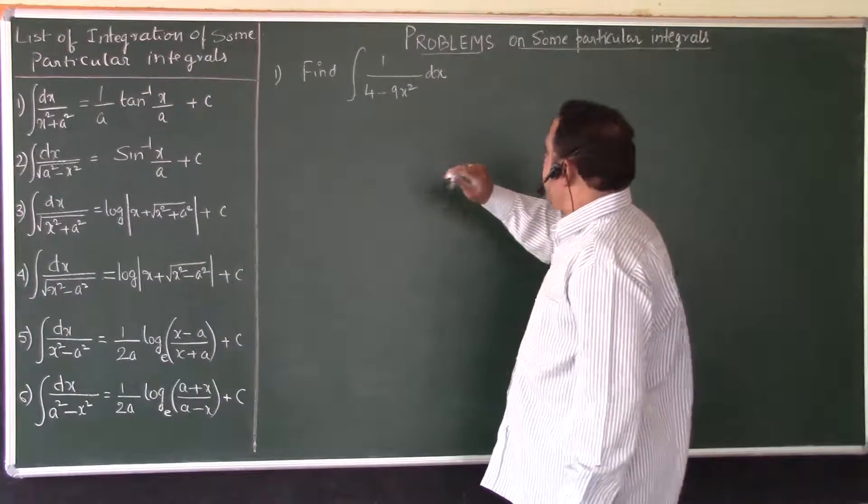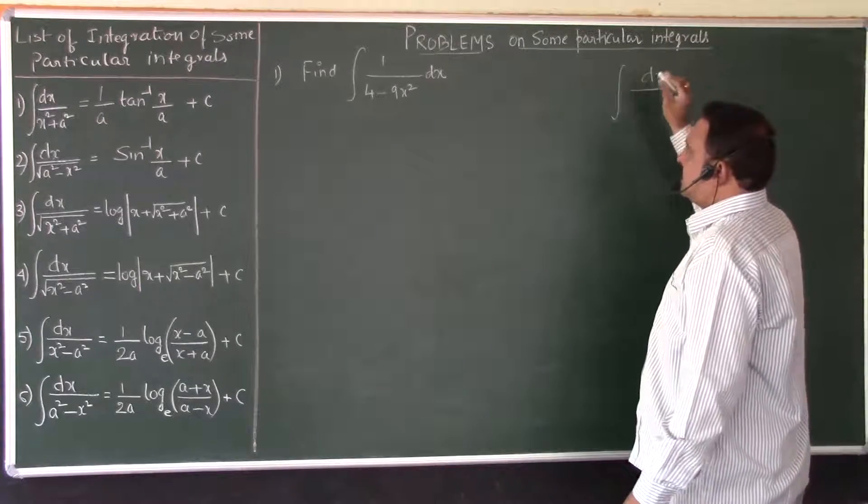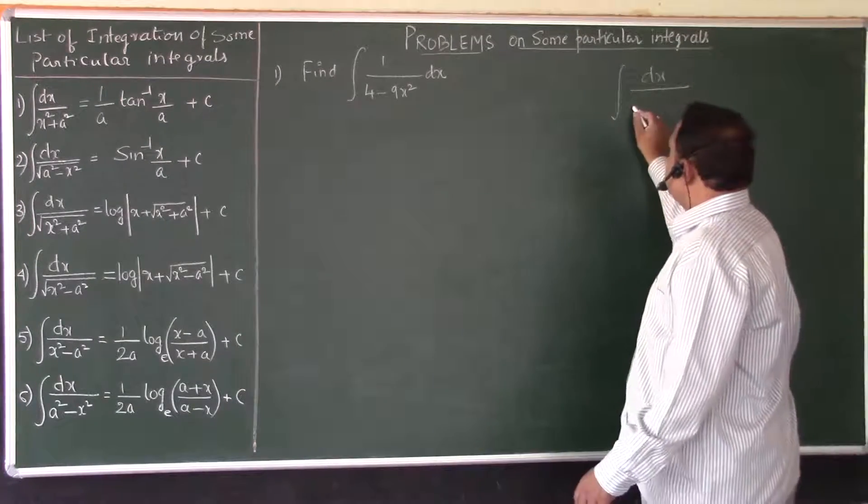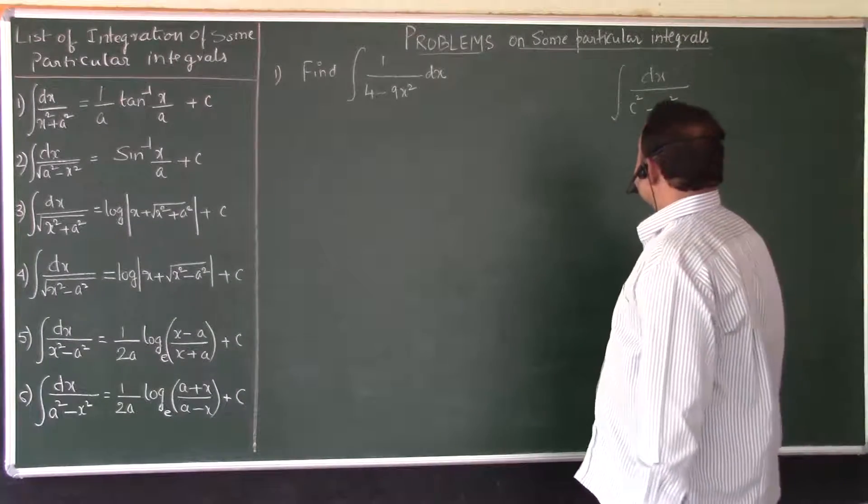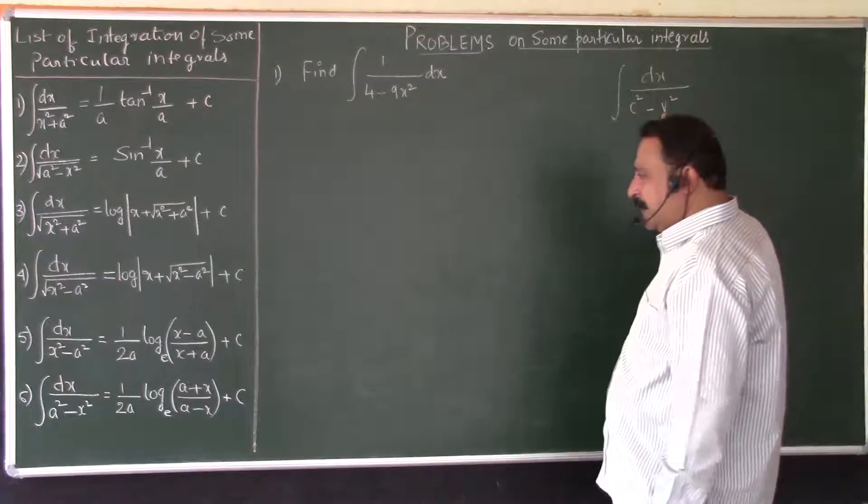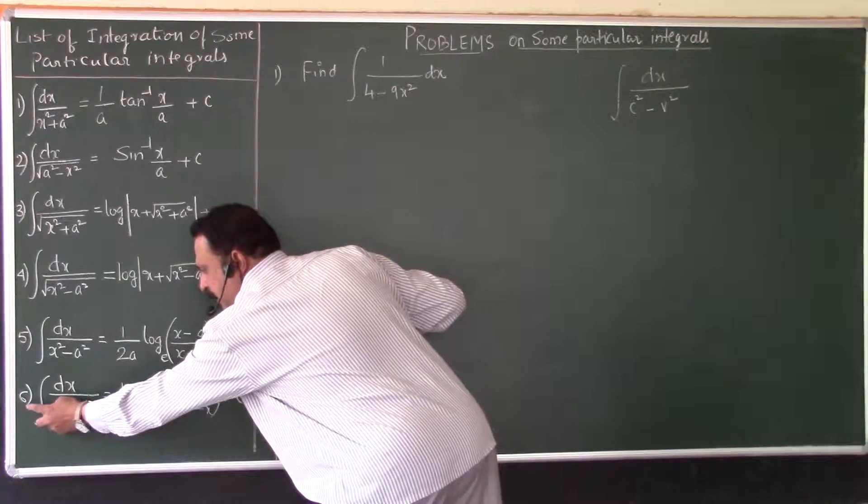Now if you look at the denominator, the problem is like this: 4 minus 9x square, that is a constant square minus variable square. A constant square minus variable square is the particular integral number 6.